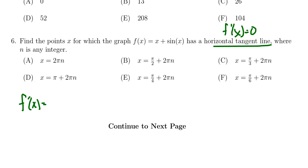By usual derivative rules, the derivative of f(x) here would be 1 + cos(x). We have to see when that equals zero. Subtracting one, we get that cos(x) = -1.